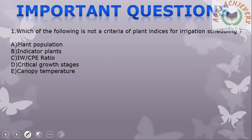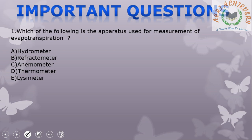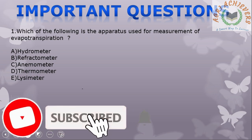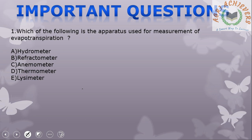Practice Questions: Question 1 — Which of the following is NOT a criteria of plant indices for irrigation scheduling? Options: plant population, indicator plants, IW/CPE ratio, critical growth stages, canopy temperature. The correct answer is IW/CPE ratio. Question 2 — Which of the following is the apparatus used for measurement of evapotranspiration? Options: hydrometer, diffractometer, anemometer, thermometer, lysimeter. The correct answer is lysimeter.